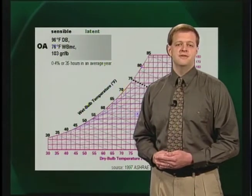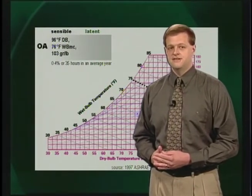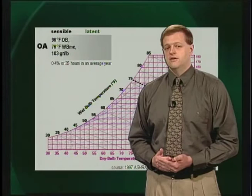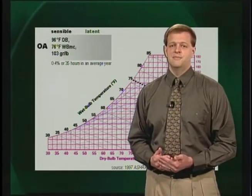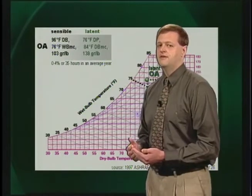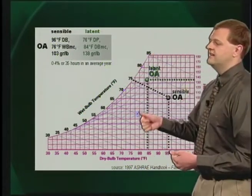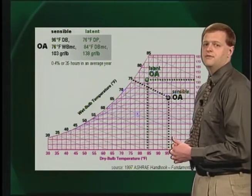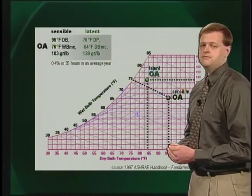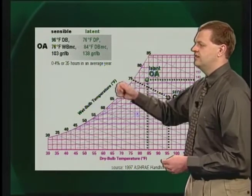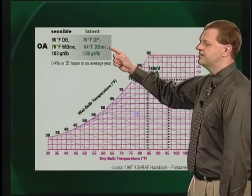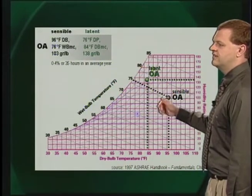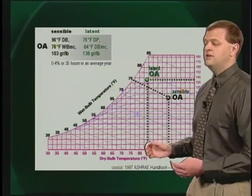For example, the 0.4% sensible design condition is 96 degree dry bulb and 76 degree mean coincident wet bulb. This means that the outdoor temperature exceeds 96 degrees for only 0.4% of the hours in an average year, or 35 hours. In many climates, however, the latent load on the cooling coil is not greatest when the outdoor dry bulb temperature is the highest, but when the humidity ratio of the outdoor air is the highest. This latent design condition was added to the 1997 ASHRAE Handbook of Fundamentals and consists of a dew point temperature or humidity ratio and a mean coincident dry bulb temperature. The 0.4% latent design condition is 76 degree dew point and 84 degrees mean coincident dry bulb.